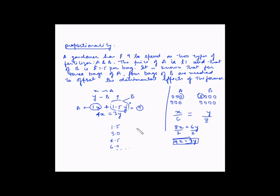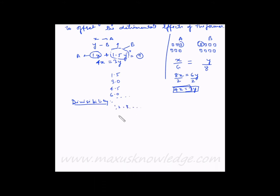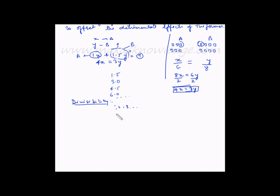The next term is divisibility. This indicates that the variables are not restricted to integer values — that is, they are not restricted to 1, 2, 3, and so on. The decision variables are continuous and as such their fractional values are permitted in the solution, so it can be 1.5, 1.8, and so on.